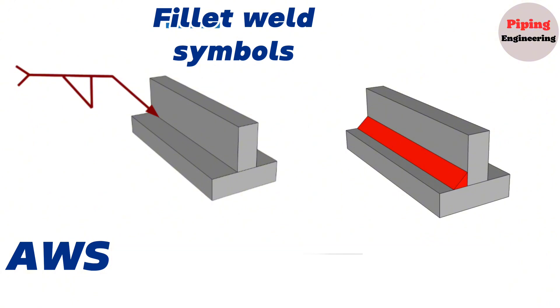If the fillet welding symbol is showing below side of the reference line, the weld is carried out on the side of the joint at which the arrow points, near side.